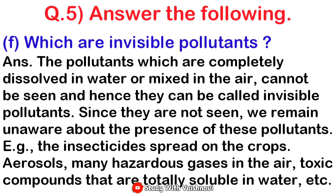Next: which are invisible pollutants? In the previous question we learned about visual pollutants; in this question we learn about invisible pollutants. Answer: pollutants that are completely dissolved in water or mixed in the air cannot be seen and hence are called invisible pollutants. Since they are not seen, we remain unaware of their presence. Examples: insecticides sprayed on crops release hazardous gases in the air; toxic compounds totally dissolved in water.